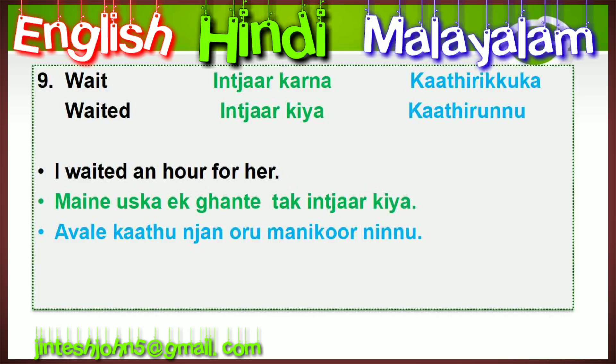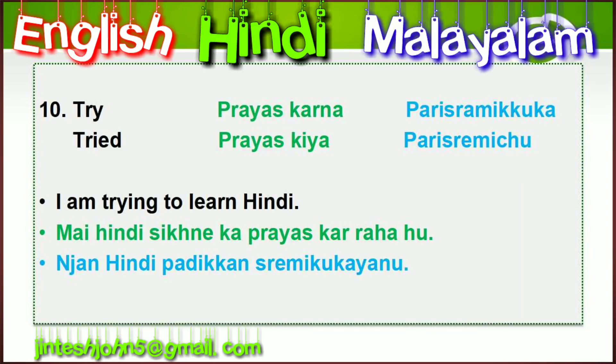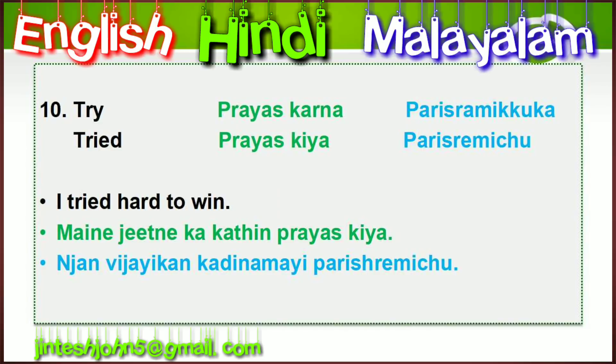The final verb is 'try.' In Hindi: prayas karna / parisramikuga. Second form 'tried': prayas kiya / parisramichu. Example: 'I am trying to learn Hindi.' And: 'I tried hard to win.' In Hindi: maine jeetne ka kadin prayas kiya. In Malayalam: nyan vijayikkan kadinamai parisramichu.